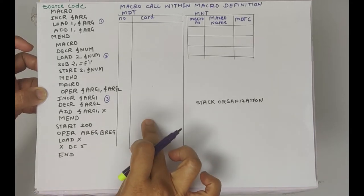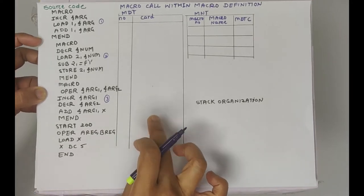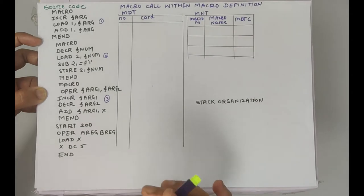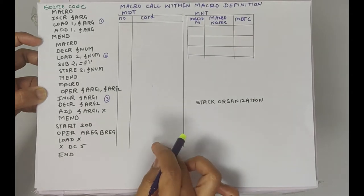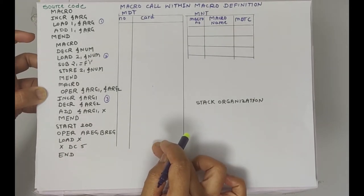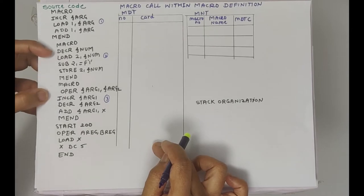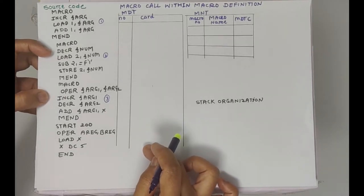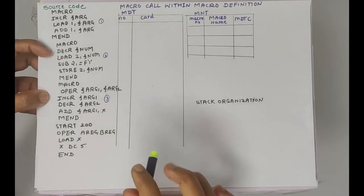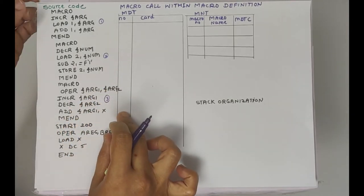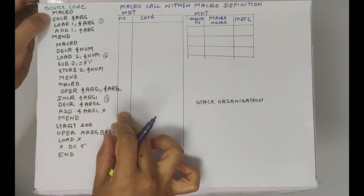So this is MDT. MDT has an MDT number and card — this is the data structure of MDT. MNT has macro number, macro name, and the MDTC position of the MDT table. We will scan the source code line by line.